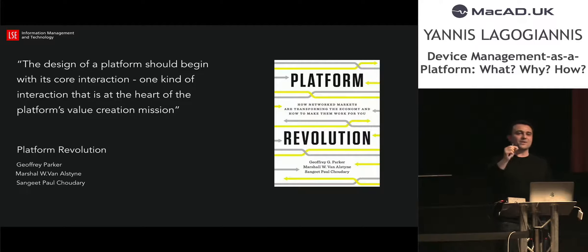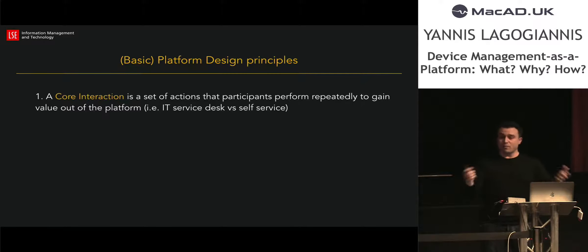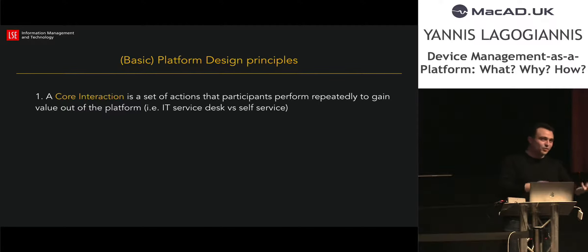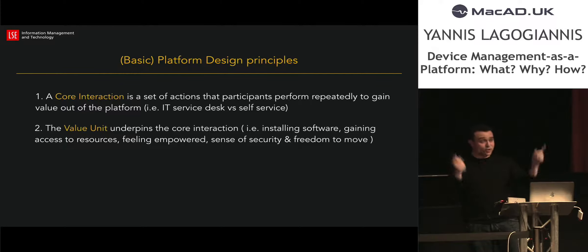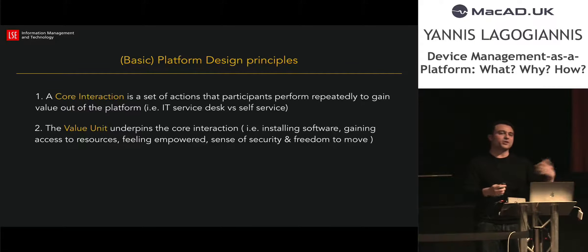The design of a platform begins with its core interaction — it's at the heart of everything. It's a set of actions that participants will perform repeatedly to gain value from the platform. For example: do we want users, when they want new software, to call the service desk, wait for a call to be logged, passed to second line, third line, and so on — or do we want them to go to something like Self Service? That generates value for the user. The value unit underpins that core interaction. Value in platform design can include installing software, gaining access to resources, and even softer things like feeling empowered to act whenever you like.